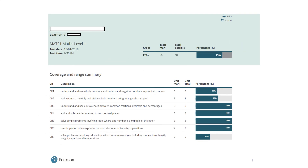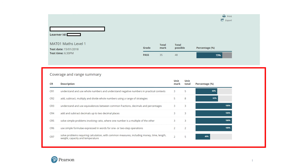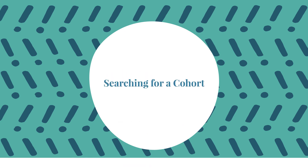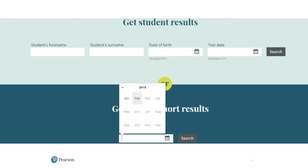This is an example of what the feedback will look like. As you can see, the feedback is given through coverage and range summaries, so you can easily pinpoint areas that a learner may need to work on in order to improve their performance.